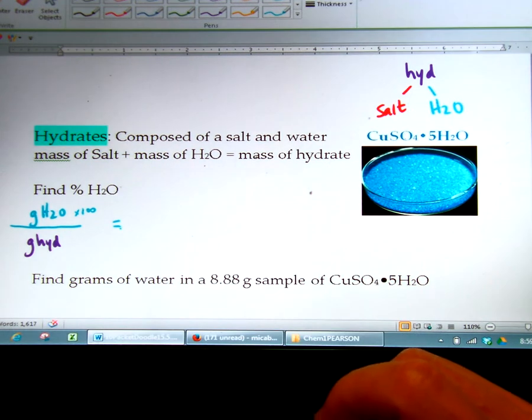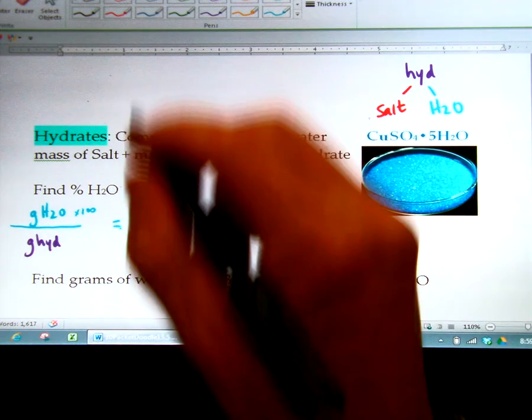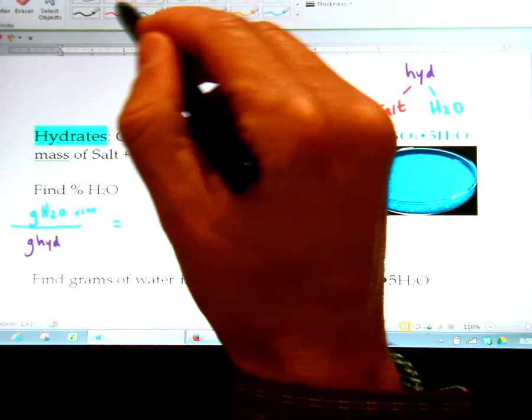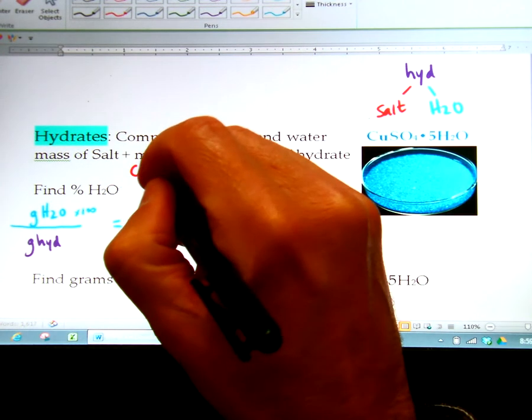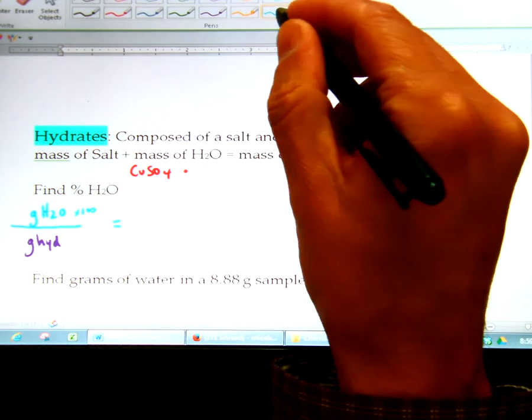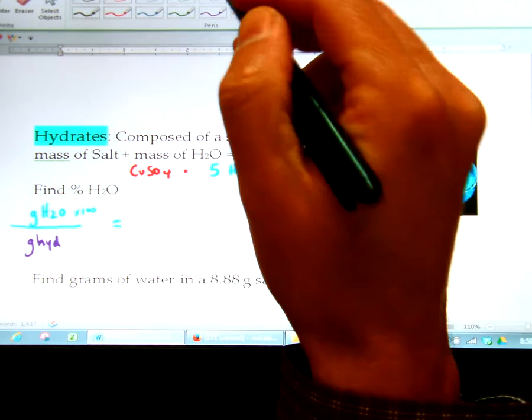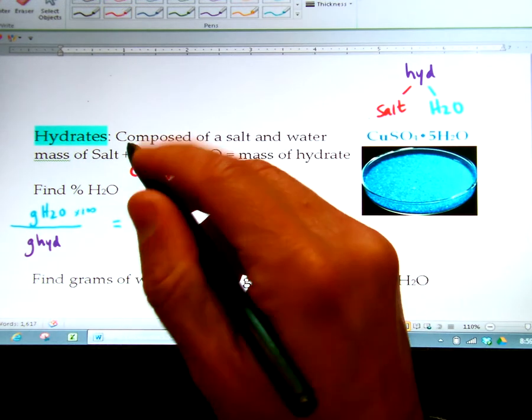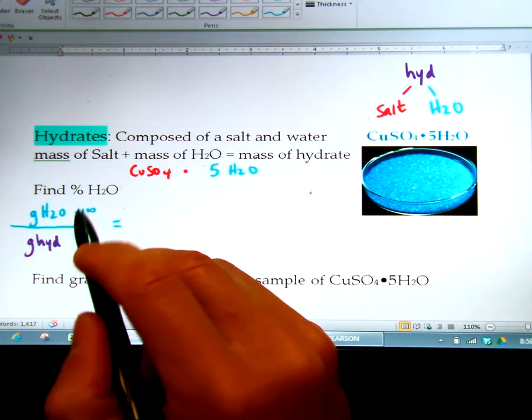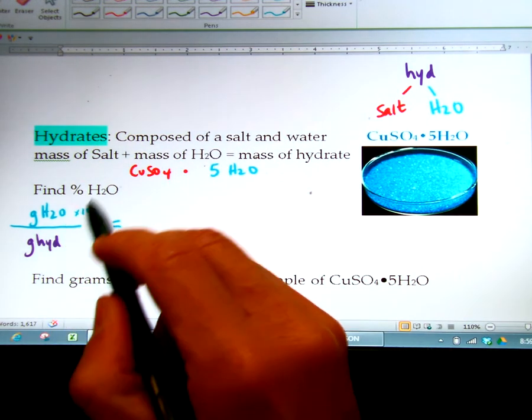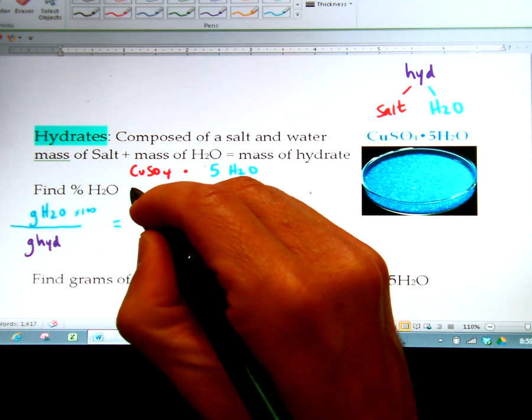CuSO4·5H2O, if you write that out, the salt is the CuSO4 and then we're attached to five waters. So if you look at the periodic table, remember when we learned before that percents are by mass. I say percent, you say grams. So this is all grams from the periodic table.